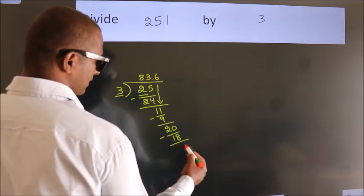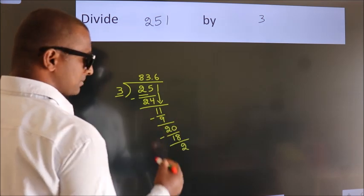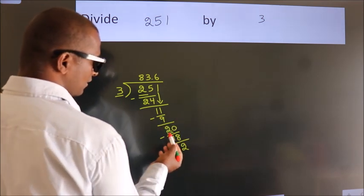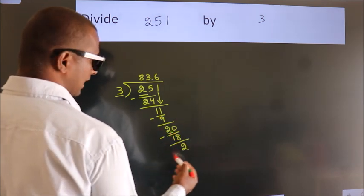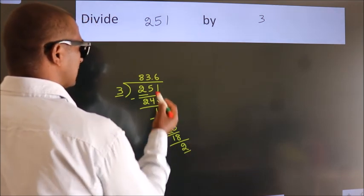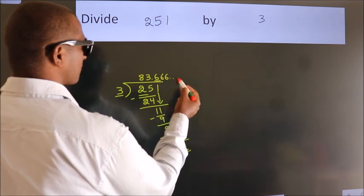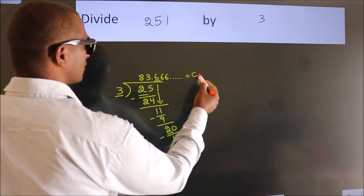Now we subtract. We get 2. Now you observe, we had 2 here and we got 2 again. That means this number keeps on repeating. So this is our quotient.